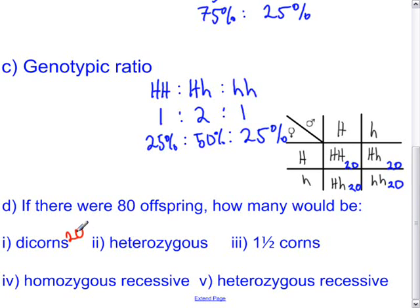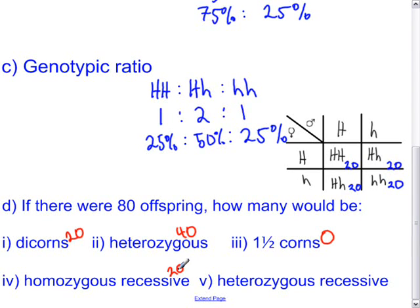How many will be heterozygous? Heterozygous offspring occupy two boxes, so that is 40. How many would be one-and-a-half corns? This is a trick question — there are no one-and-a-half corns. If heterozygous, the individual takes after the dominant trait, so the answer is zero. How many are homozygous recessive? That is one box — 20.